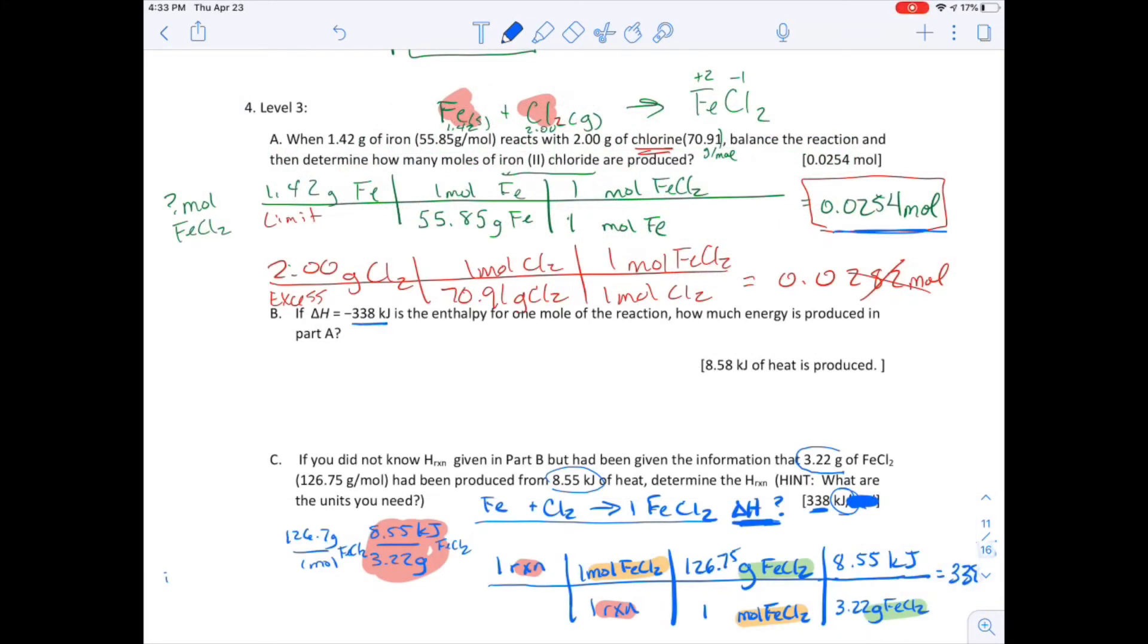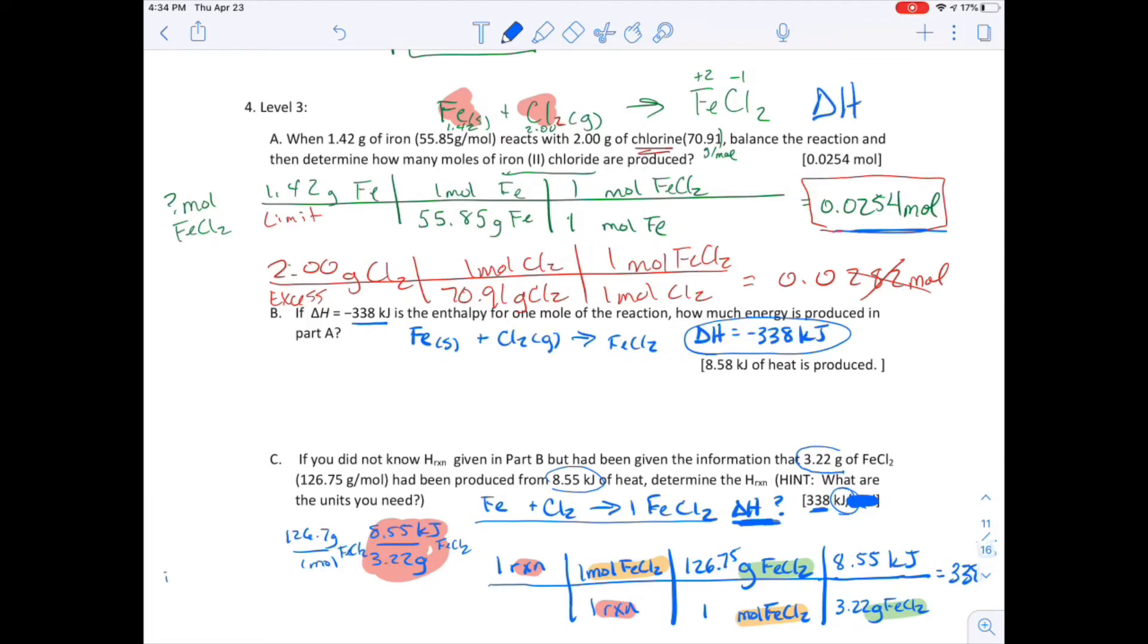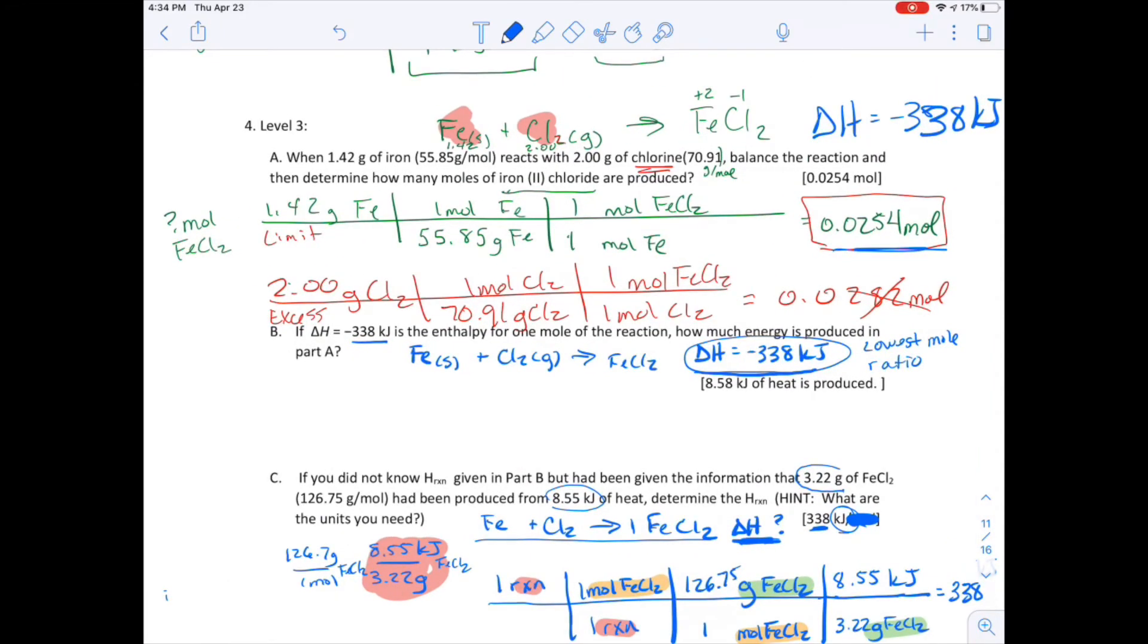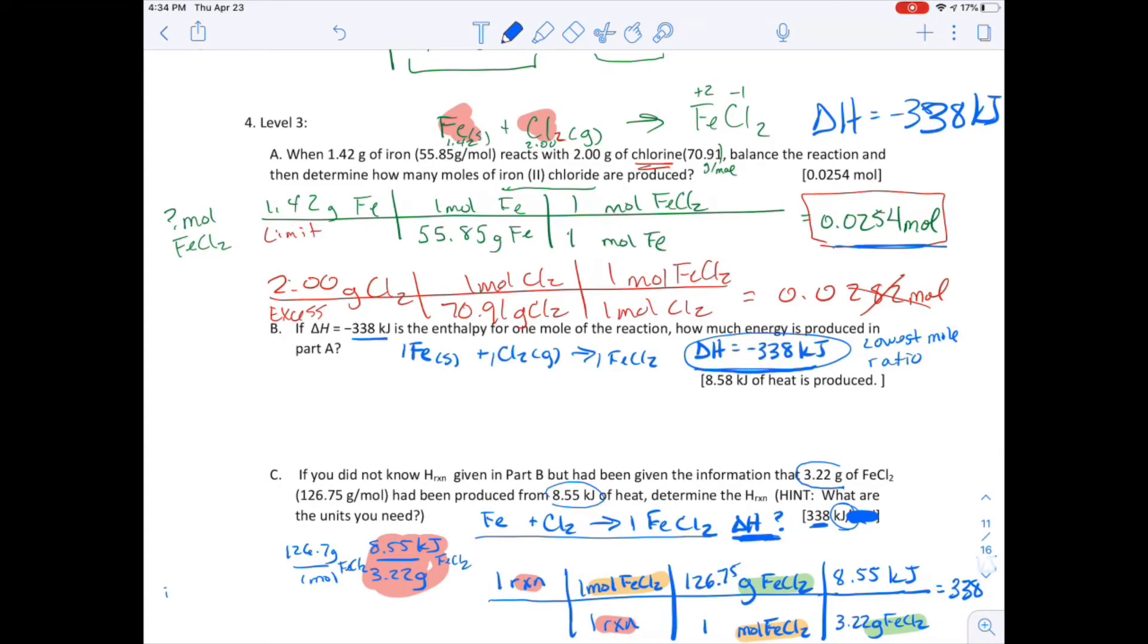In Part B, we have a number, 338 kilojoules. Part B is the same equation as Part A. It's Fe solid plus Cl2 gas goes to FeCl2. And what we know now is that the delta H is negative 338 kilojoules. I just want to pause and comment on this. This number right here, this 338, this number is the energy for the lowest mole ratio of this reaction in whole numbers. We aren't getting into halves or quarters. It's whole numbers. So it's for this, this, and this. That's what that number is.